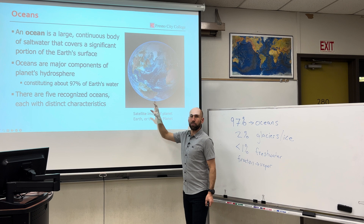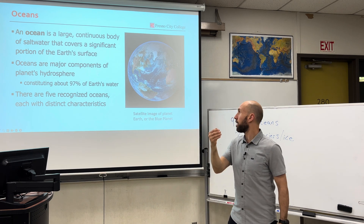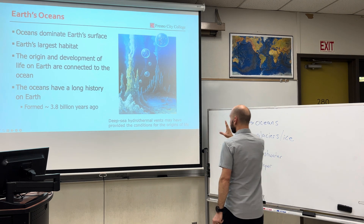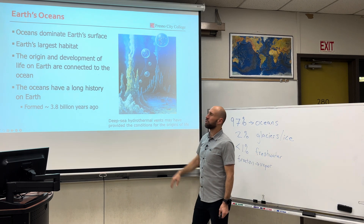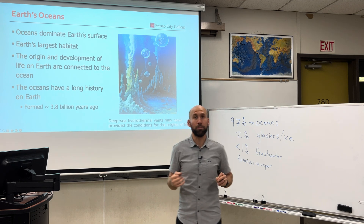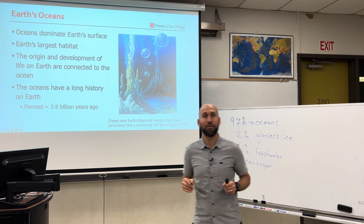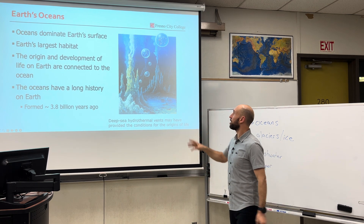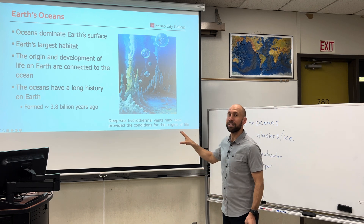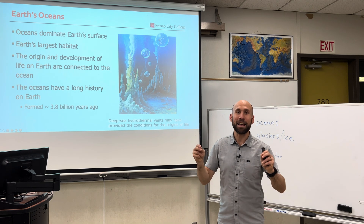We have five recognized oceans, each with their own distinct characteristics. Oceans are cool — they're the dominant feature. When you look at earth, it is called the blue planet because our planet is covered with water, of which 97% of the water on earth is in the oceans. The oceans are the largest habitat supporting life on earth, and it is the habitat where, to the best of our understanding, life began.